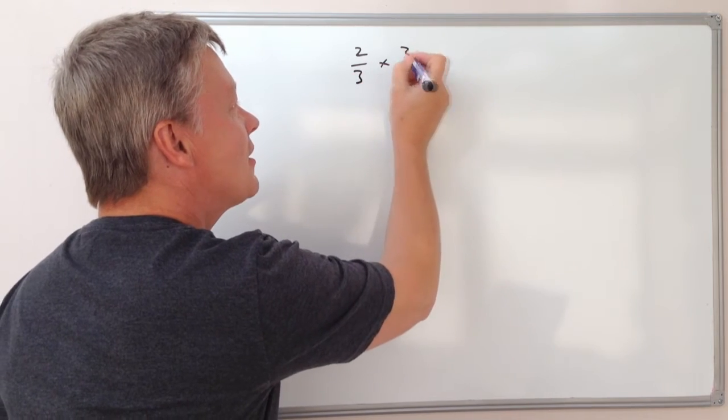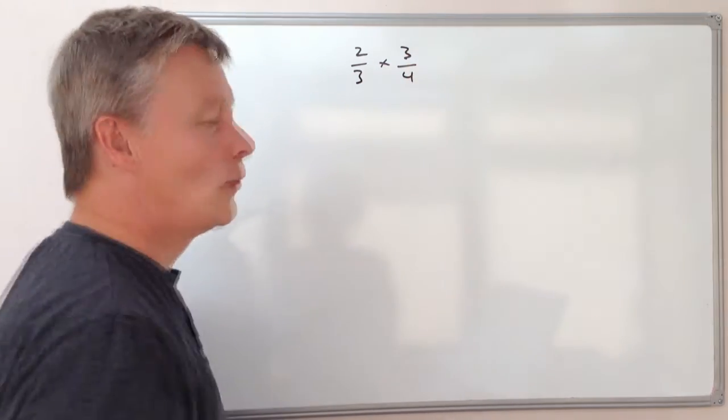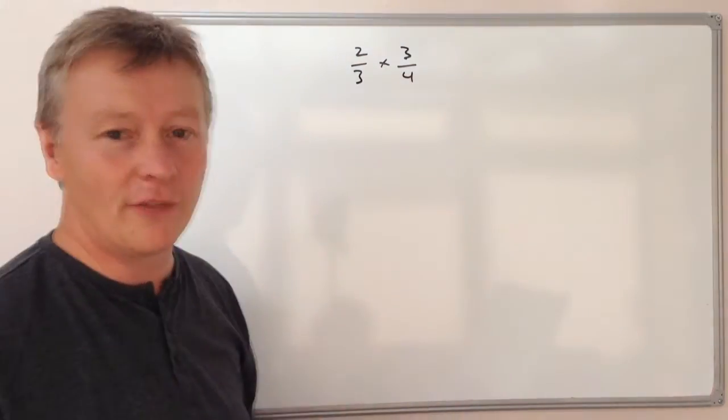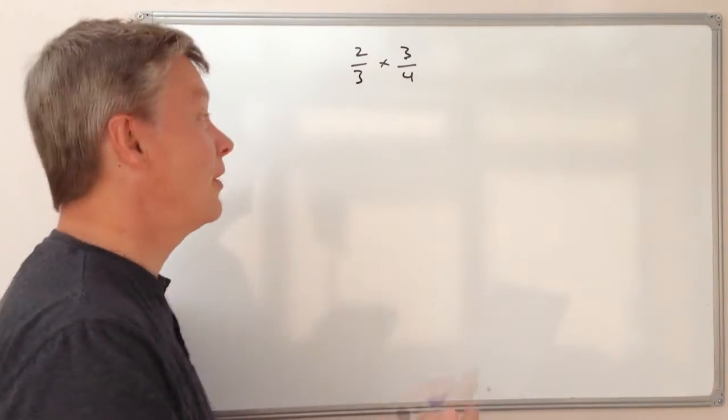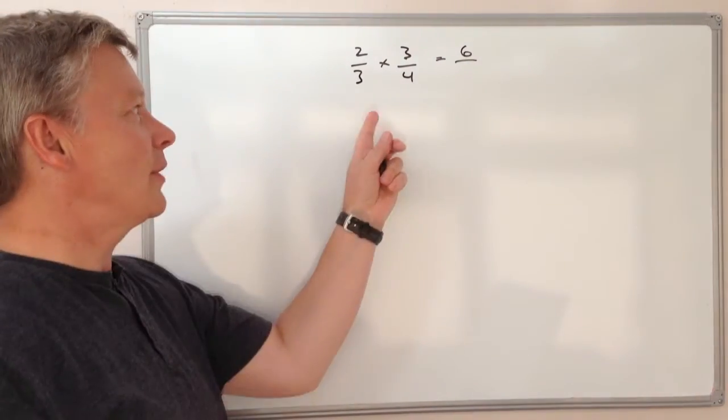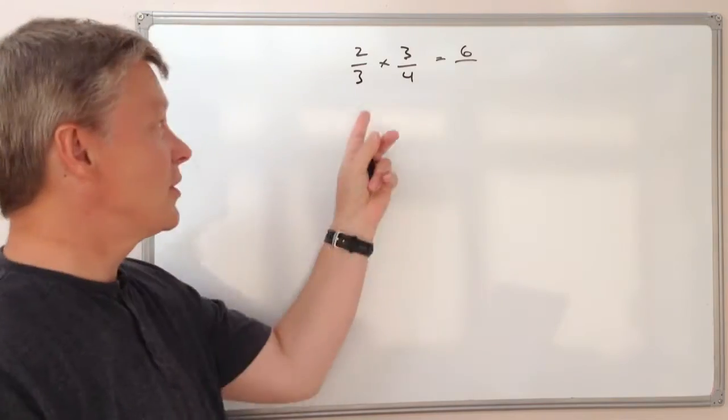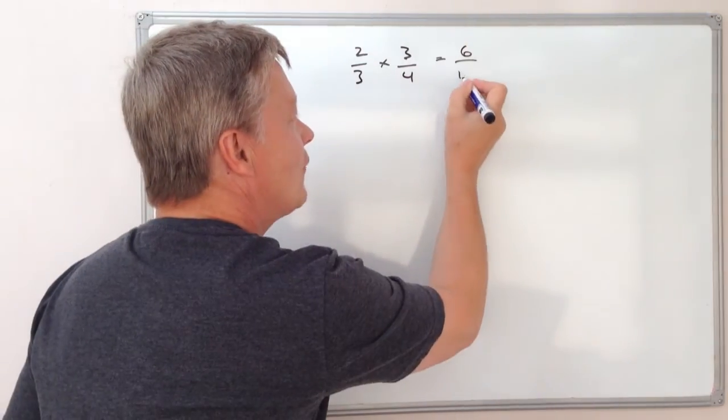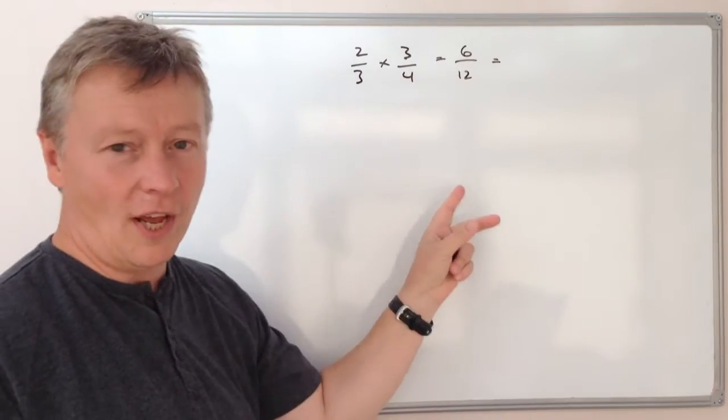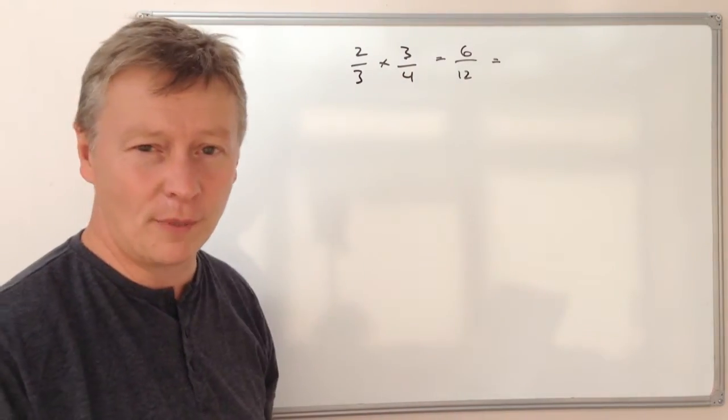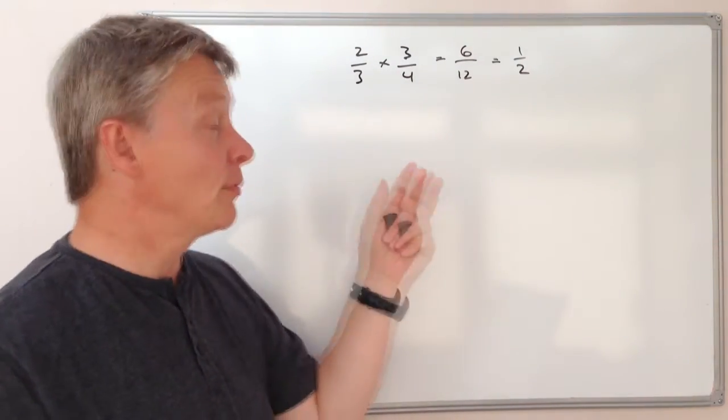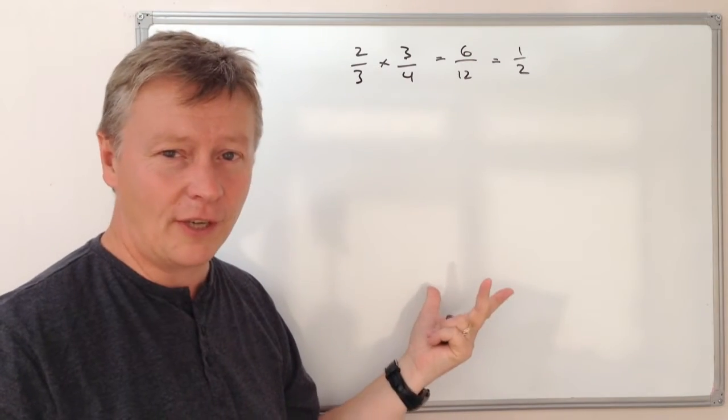So we've got something like 2 thirds times 3 quarters. Well, what we can do is multiply the numerators, that's the numbers at the top together, and we get 2 times 3 is 6, and then the bottom we multiply the denominators together, which is these numbers, and 3 times 4 is 12. So then we can reduce that by dividing the top and bottom by 6, and that will give us 1 half. That's fairly straightforward and perhaps not a bad way of multiplying fractions.